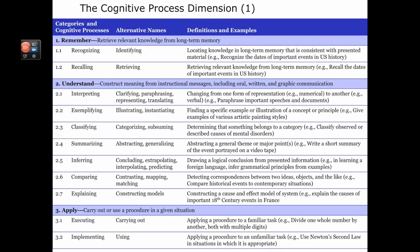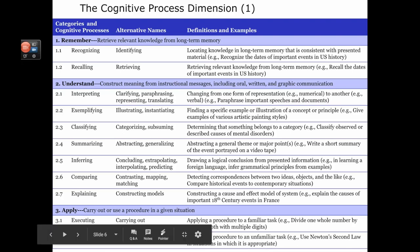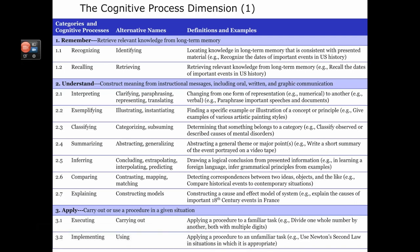Another dimension is the cognitive process dimension here and this is the one that is more familiar and suggestive of layers of kinds of complexity of questions. So remembering is the first layer. Understanding is the second one. That's constructing meaning from instructional messages, whether they're in speech, that is oral, written or graphical communication. Apply is the third level, carry out or use a procedure in a given situation.